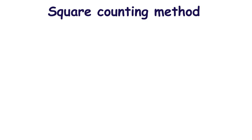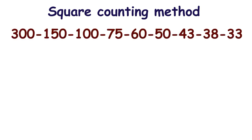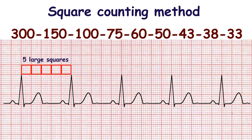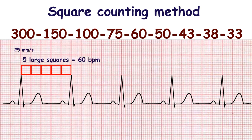When ECG is recorded with a speed of 25 millimeters per second, you should use the sequence: 300, 150, 100, 75, 60, 50, 43, 38, and 33. Counting off every large square is performed from one QRS complex to the following one.